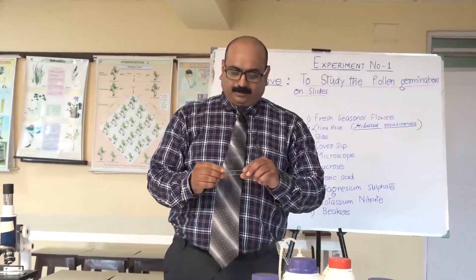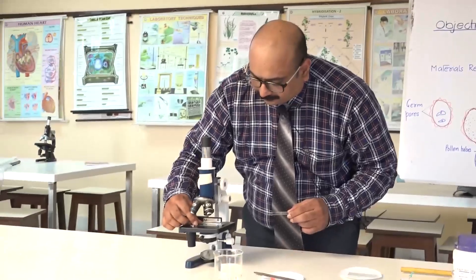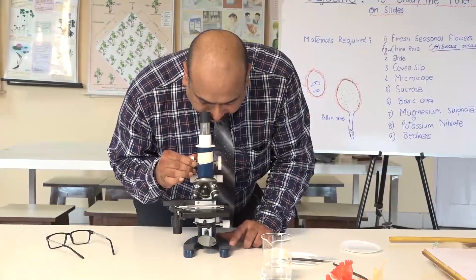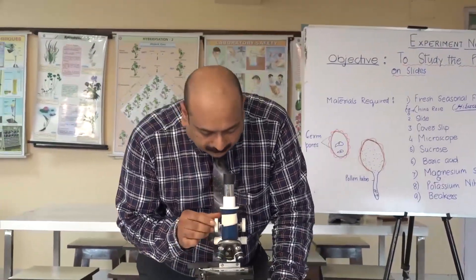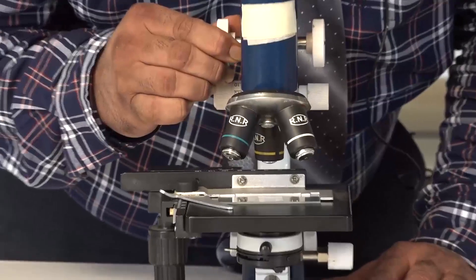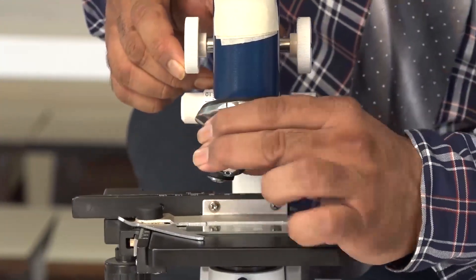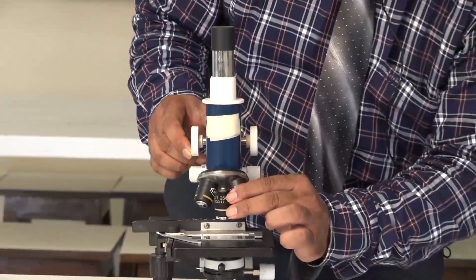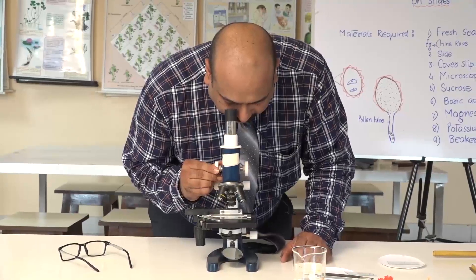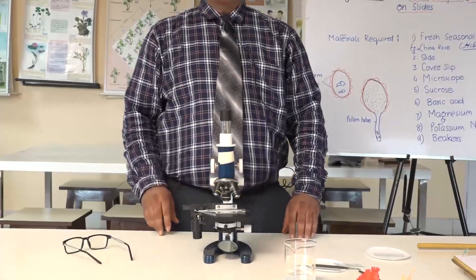I have already prepared a slide forty to forty-five minutes ago. I am watching it under low power — that is 10x — then after adjusting I will increase the resolution power up to 45x. The pollen tube has come out from the germinal pore, so this experiment is successful.